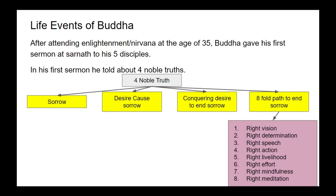After learning meditation he did extensive meditation at Bodh Gaya under the Bodhi tree, where he attained enlightenment. After attaining Nirvana at the age of 35, Buddha gave his first sermon at Sarnath to his five disciples. In this first sermon he told about the four noble truths: sorrow; desire causes sorrow; conquering desire to end sorrow; and the eightfold path to end sorrow. The eightfold path includes: right vision, right determination, right speech, right action, right livelihood, right effort, right mindfulness, and right meditation.